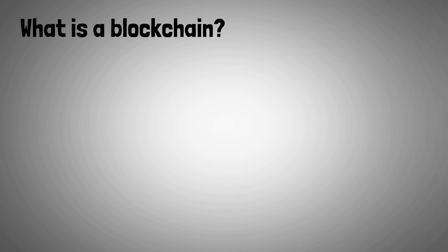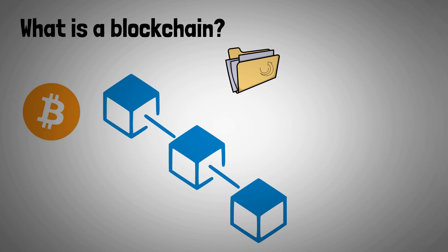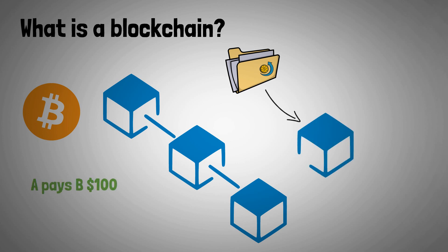First of all, what is a blockchain? In a nutshell, blockchain is a system for storing data in a chain of data blocks. This data can be anything, but for Bitcoin, the number one blockchain, this data is literally a list of transactions that can be consulted by anyone. For example, it might look like this: A pays B $100, X pays Y $15, I pays R $47.